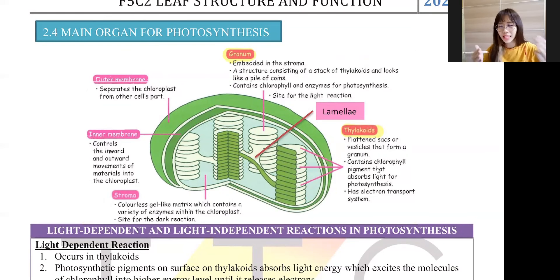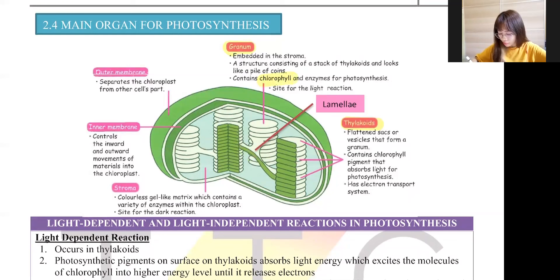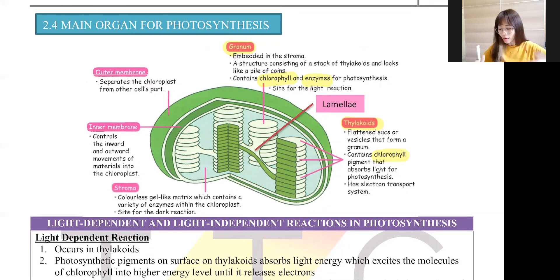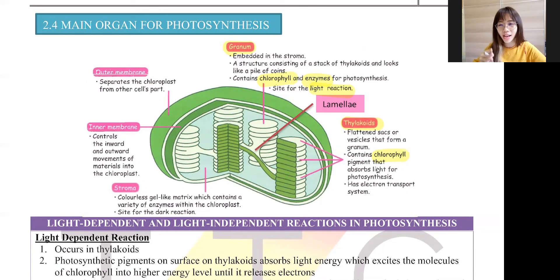The granum and thylakoids contain the same thing — chlorophyll. Chlorophyll is the most important component because it carries out photosynthesis by trapping sunlight. The thylakoids also contain enzymes, which are needed to carry out photosynthesis. Since enzymes are involved, photosynthesis requires an optimum temperature — when temperature exceeds the optimum level, the enzyme will denature and the rate of photosynthesis will reduce. Also note: in the new KSSM syllabus, instead of calling it a 'light reaction,' we use the term 'light-dependent reaction.' They mean the same thing.